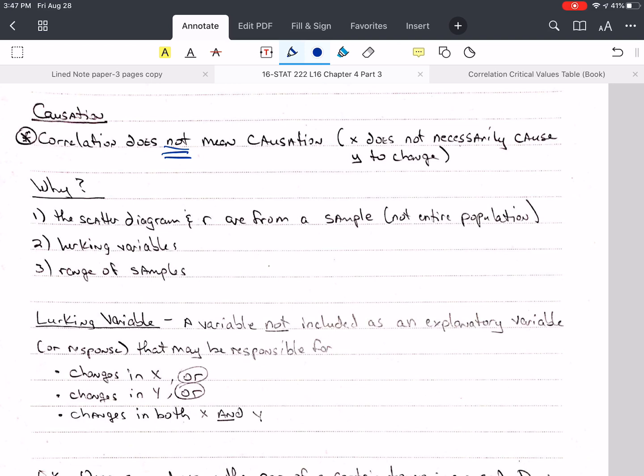So why would it not be true? Well, number one, the scatter diagram and the calculation of R are from a sample, not the whole population. Yes, we did a test, and we're testing whether there's a relationship between the sample and the population, but we can't really prove cause and effect this way. And then there's something called lurking variables. And then we have the range of the samples. So the range of our samples may not cover the entire population, and that's another issue.